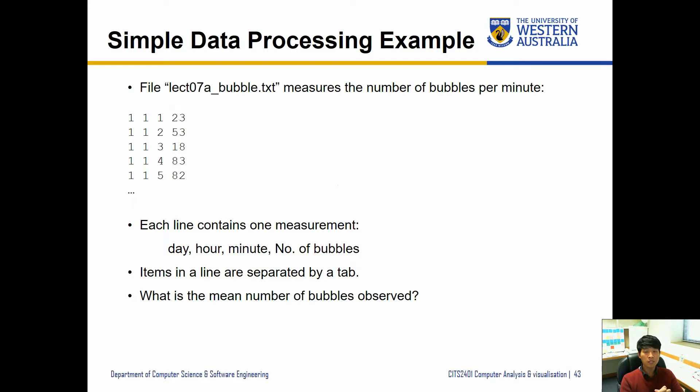So now let's process some data. That's all for really how to open files. Now what we want to do is use the data that we just retrieved. We have an example file provided for you, this bubble.txt file which measures the number of bubbles per minute. Basically it's divided by data. Each column is days, hours, minutes, and number of bubbles. So day one at the first hour at the very first minute we observed 23 bubbles, and the next one 53, 18, 83, 82, and so forth. Items in line are separated by a tab.